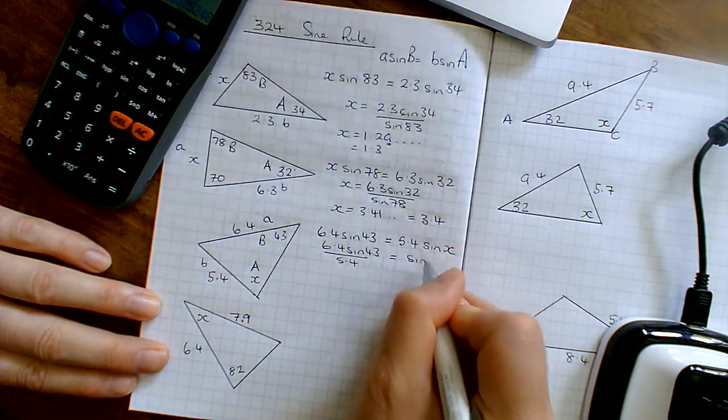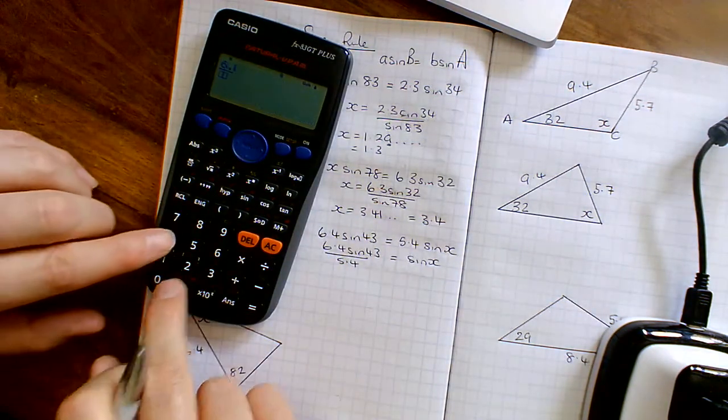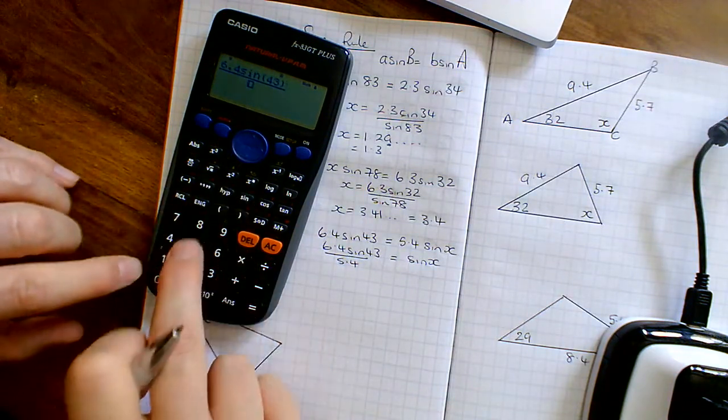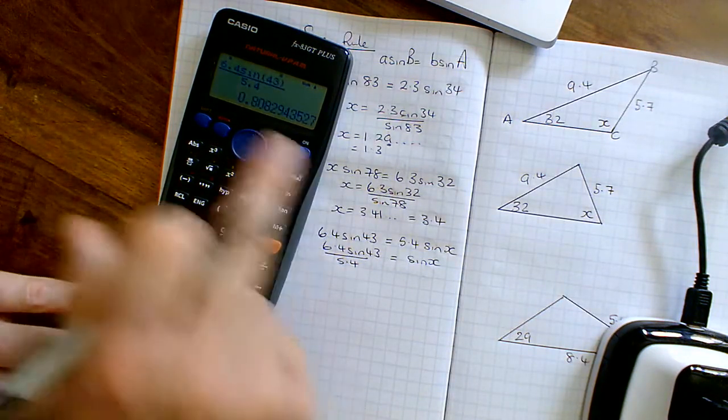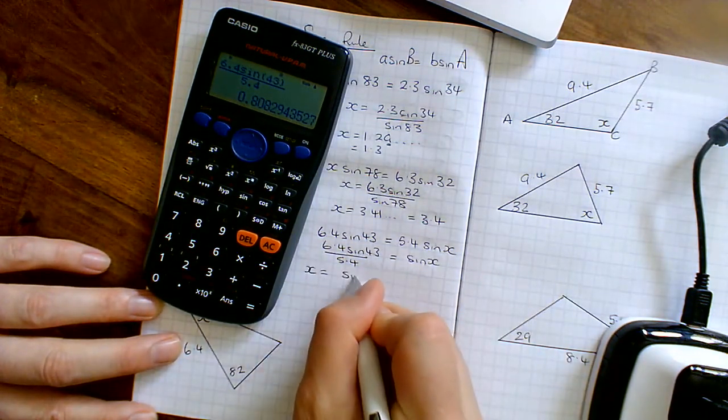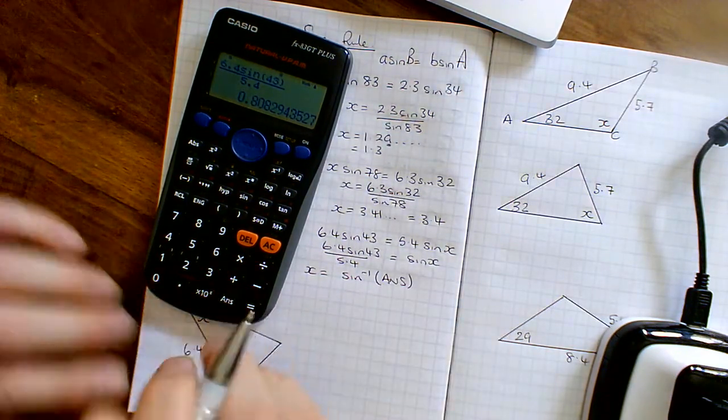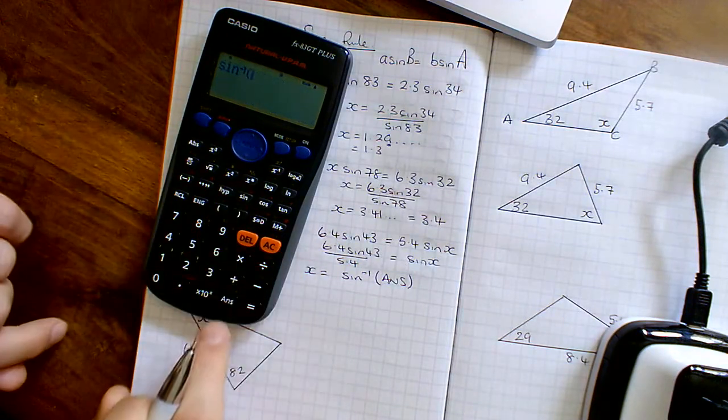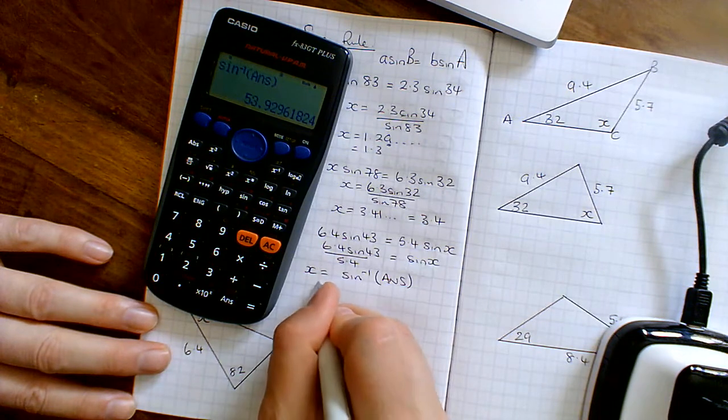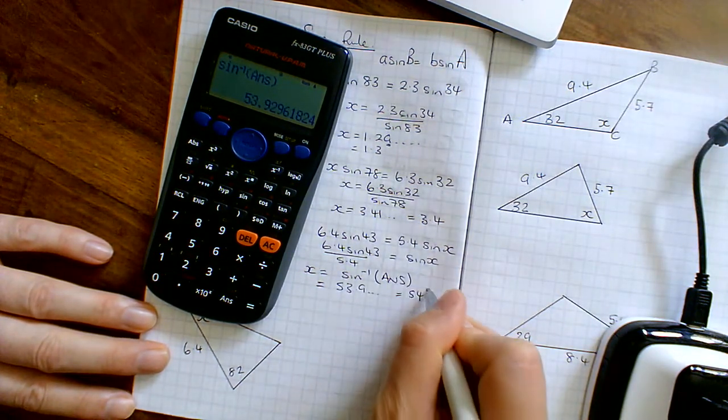Now grab your calculator, so you can work this out. Fraction, 6.4 sine of 43, close bracket, over 5.4, press equals, and I get this number. That's the sine of X, so to get X I've got to do sine minus 1 of whatever that last answer was. So I just get my calculator, do sine minus 1 of the last answer of that 0.8 rubbish, and I've got 53.9 something or other, which is 54 degrees to the nearest degree.